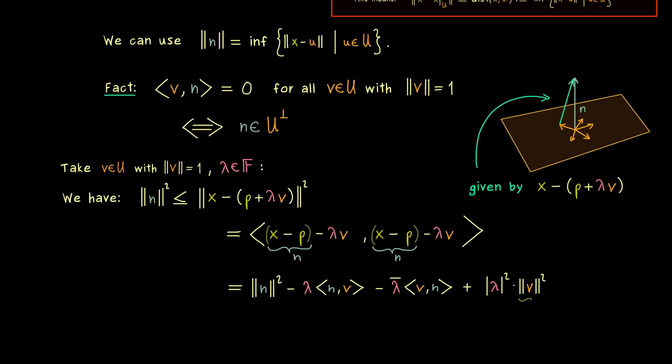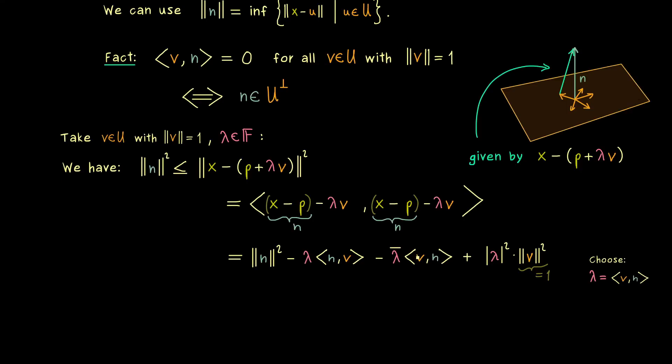And also the whole calculation holds for all scaling factors lambda, which means now we can choose a suitable one. And there you might already see, that a lambda given as v with n in the inner product is the correct one to make this equation here nicer. Simply because then we have three times the same term here. In the second term you should see, that we just multiply two complex numbers and what we get out is this complex number in the absolute value squared.